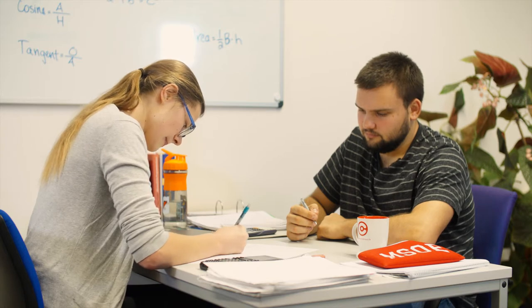And then, we simply plug it into the equation. So, tangent equals opposite. So, we draw a line to get the opposite, which is 8 meters. And then, the adjacent is 6 meters. Then, we take the inverse tangent of 8 over 6 and plug it into our calculator. And we get 53.1301 degrees.